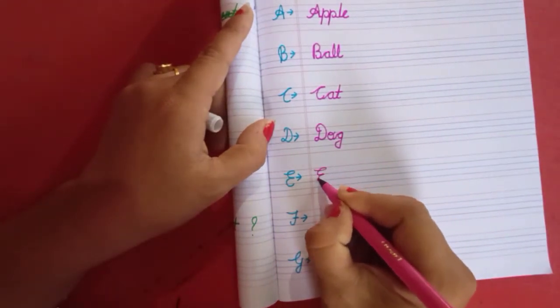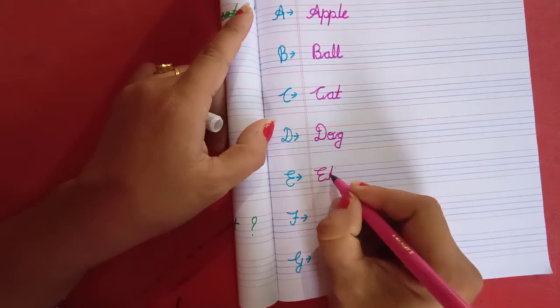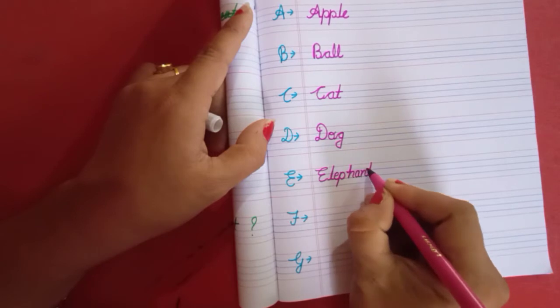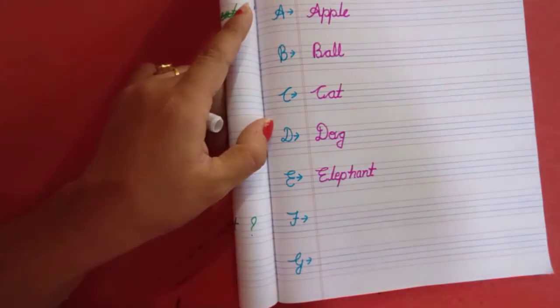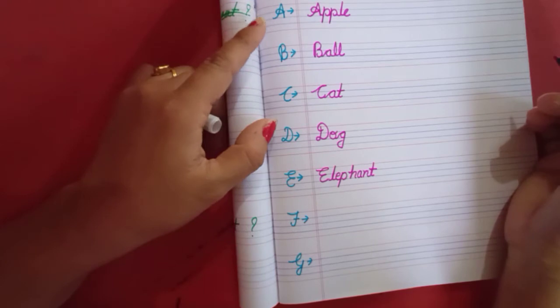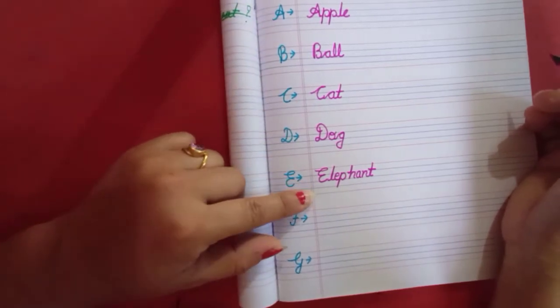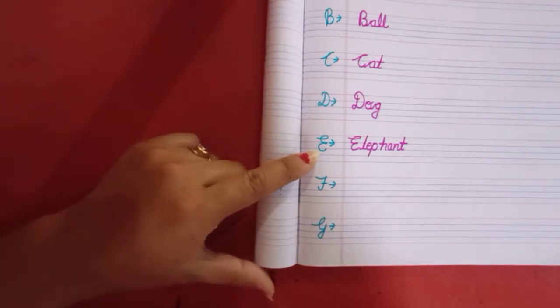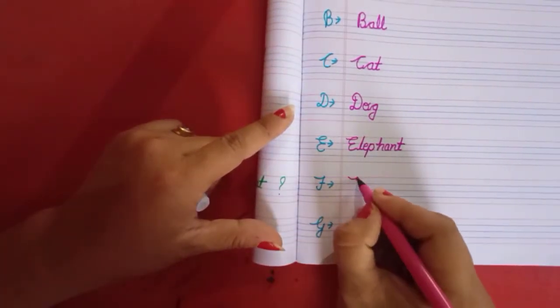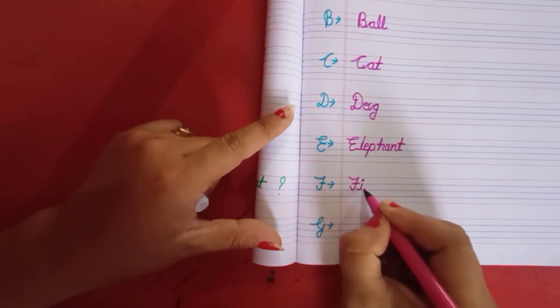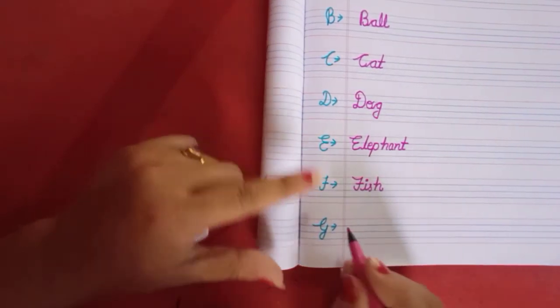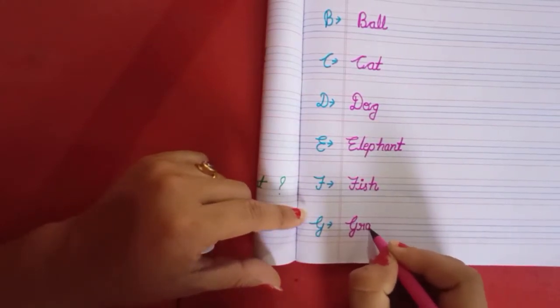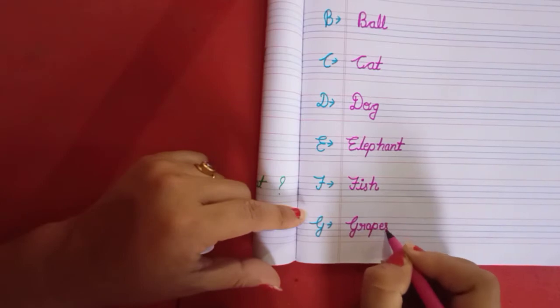Next one is E L E P H A N T. Elephant. Or you can write here E for egg. E double G. Egg. Elephant. F for fish. F I S H. Fish. G for grapes. G R A P E S. Grapes.